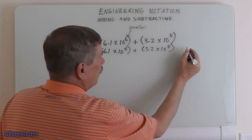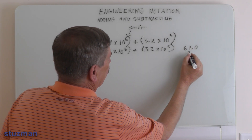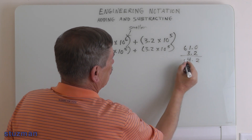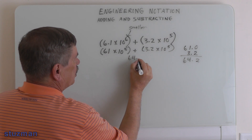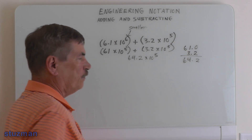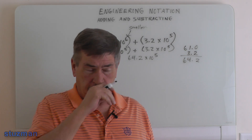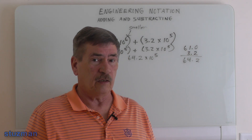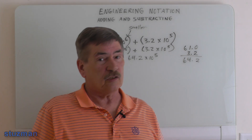Now we add our mantissas together. Both exponents are the same — 10 to the 5th — so we can add them just like we normally would. We get 61 plus 3.2, which gives us 64.2. So our answer is 64.2 times 10 to the 5th. But as you notice, that answer is not in engineering notation. In fact, I had one professor who would knock off points if you didn't give the answer in proper engineering notation, even though this is technically correct.